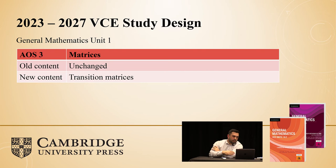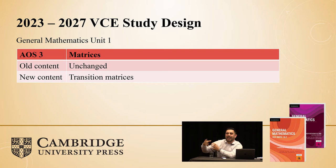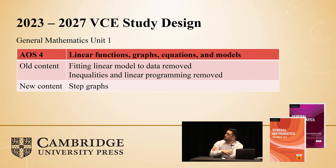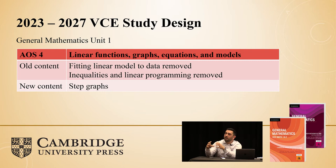Moving on to area of study three — matrices. There's no change to the year 11 content in matrices. However, we have been instructed to introduce transition matrices in the year 11 course, not as in depth as what we're used to in three and four, but there will be some introduction — talking about the proportions of movement between say two or three variables. Looking ahead to linear functions and graphs: even though this content isn't formally assessed in three and four anymore, we are still expected to go through it at year 11 level. However, inequalities and linear programming has been removed, so you don't need to fit that into your year 11 courses anymore.